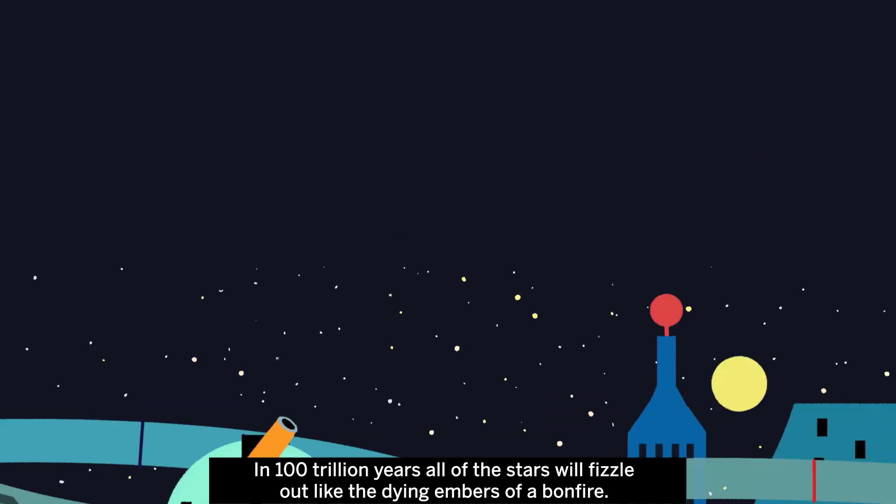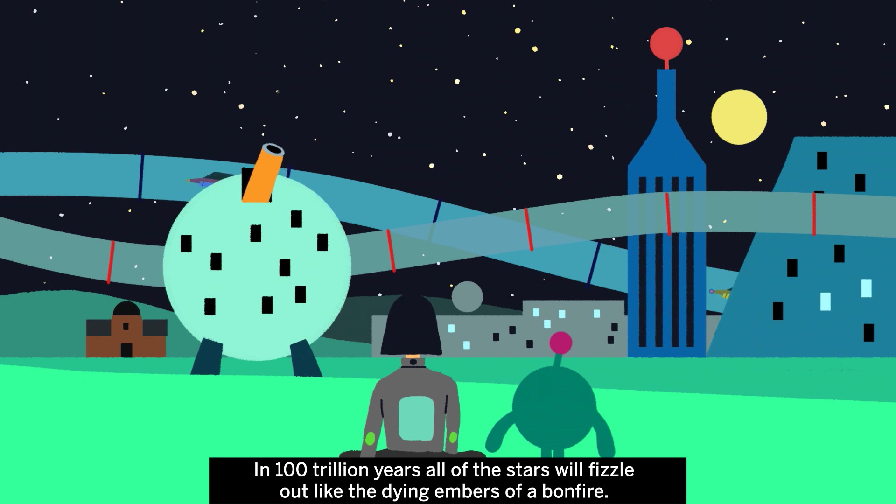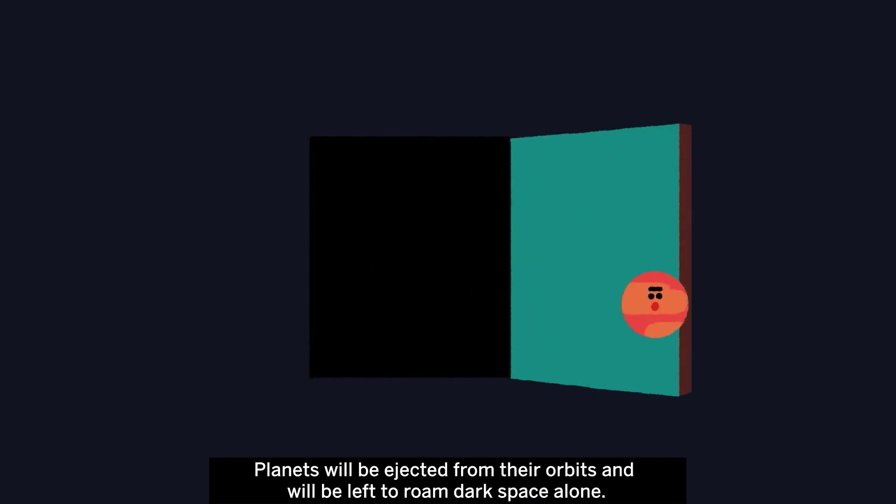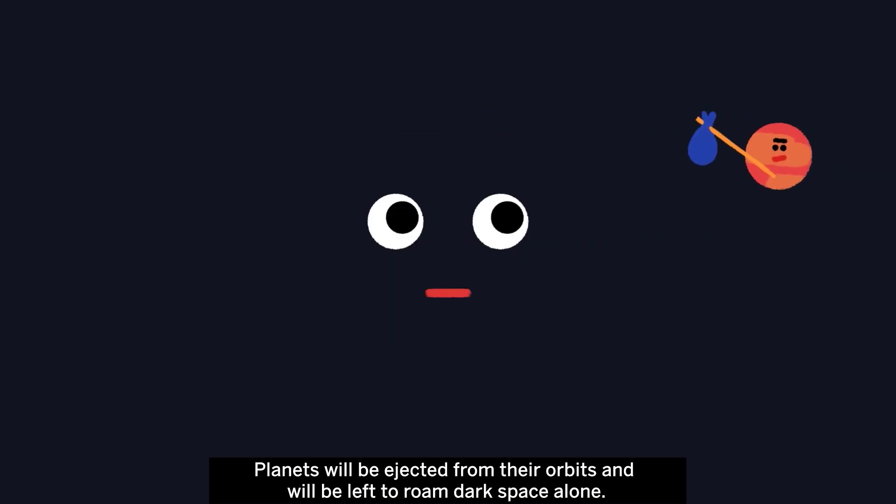In 100 trillion years, all of the stars will fizzle out like the dying embers of a bonfire. Planets will be ejected from their orbits and will be left to roam dark space alone.